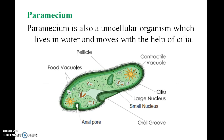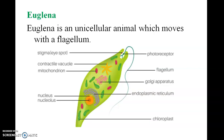Similarly, paramecium is a unicellular organism which lives in water and moves with the help of cilia. Euglena is a unicellular organism which moves with the help of a flagellum.